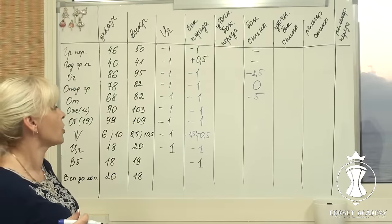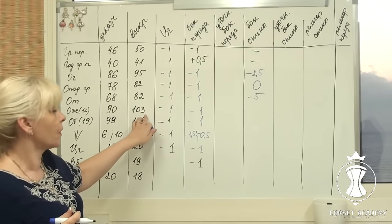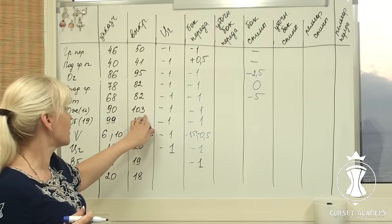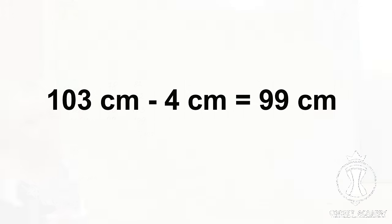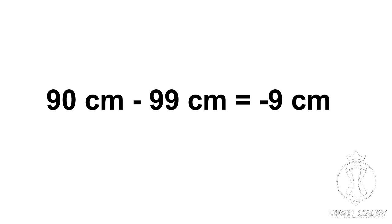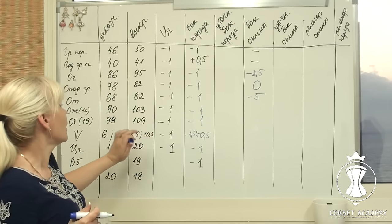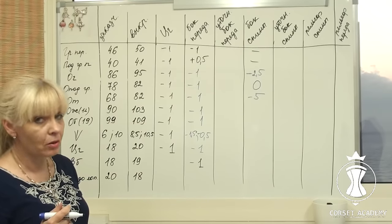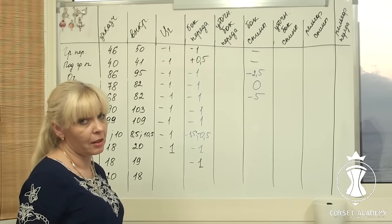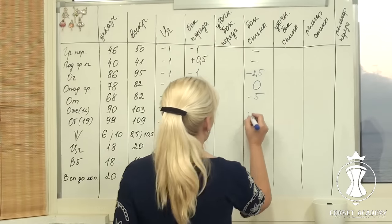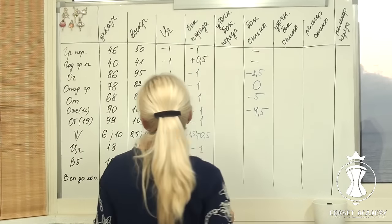Stomach circumference. My client's measurement is 90 cm and it is 103 cm on the pattern. 103 cm minus 4 cm equals 99 cm. 90 cm minus 99 cm equals negative 9 cm. I divide the value in half. As a result, I need to shift either side of the back 4.5 cm inwards at the level of the stomach line — 12 cm below the waistline. I write negative 4.5 cm in the table.